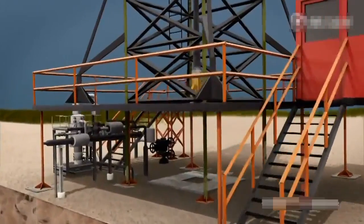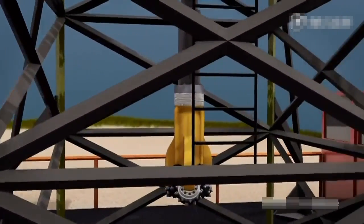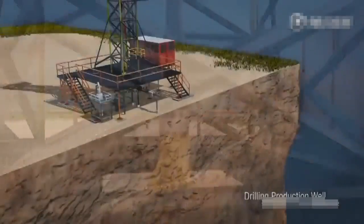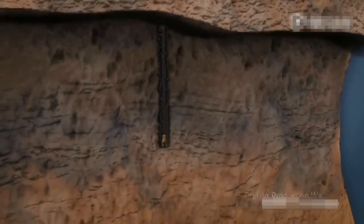Simply put, UCG works like this. A vertical production well is drilled into the coal seam, which can be located more than 300 meters and up to 2 kilometers below the surface.